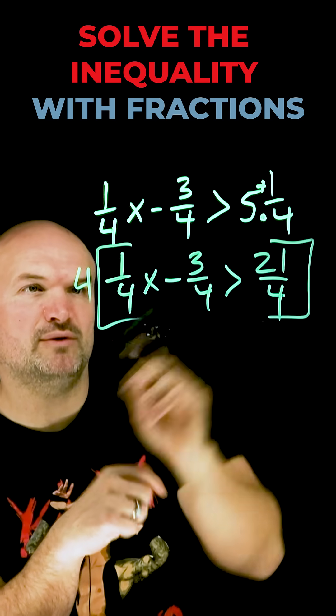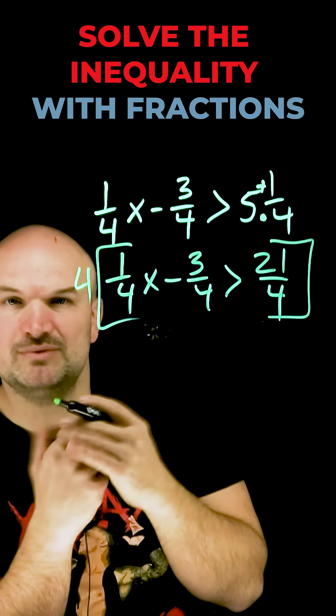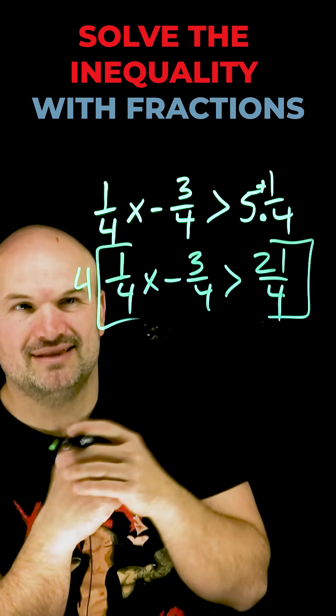So I'm going to multiply by 4 times each of these terms. The 4 and the 4 in the denominator are going to divide to 1, which is another way of saying they cancel out.